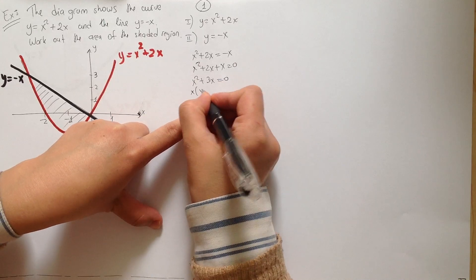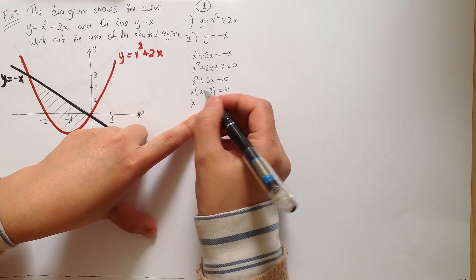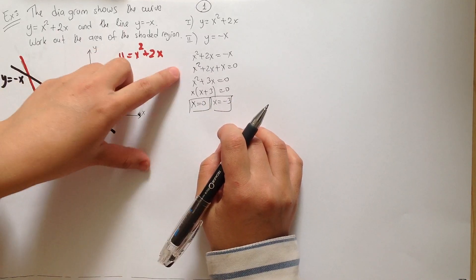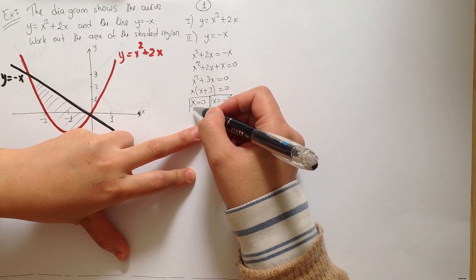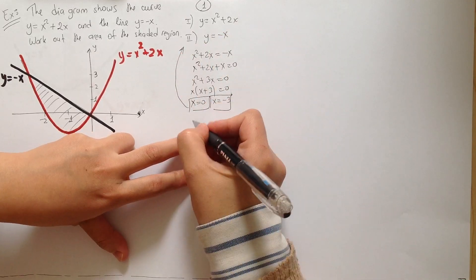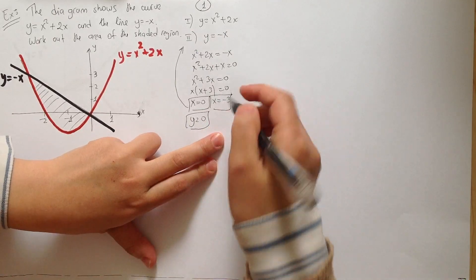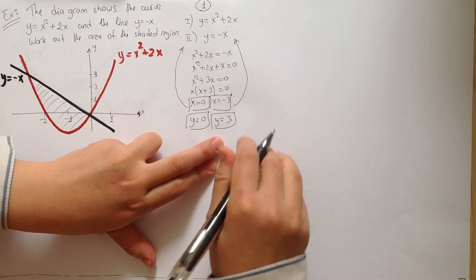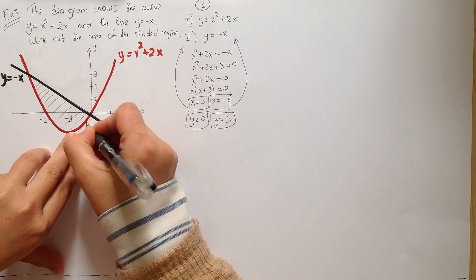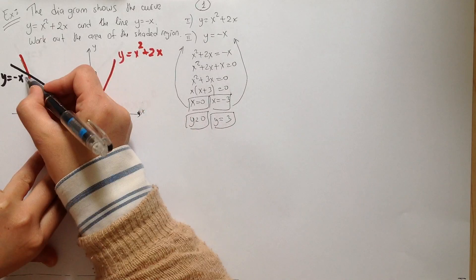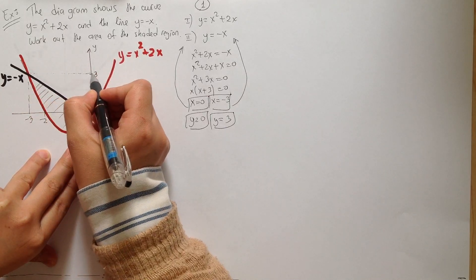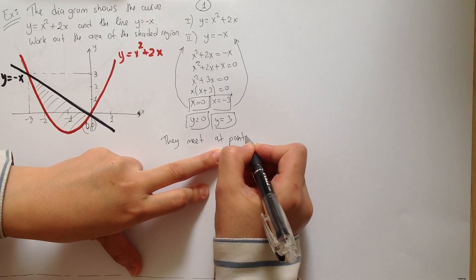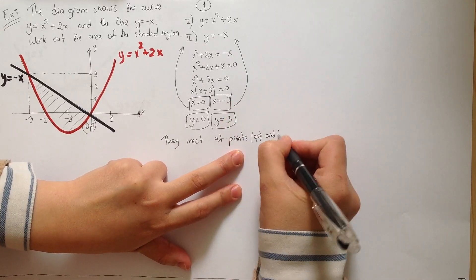Taking out the common factor x, we get x(x plus 3) equals 0. So we have two solutions: x equals 0 and x equals minus 3. To find y, substitute x equals 0 into the second equation: y equals 0. When we substitute x equals minus 3 into the second equation, y equals 3. So the curves meet at points (0, 0) and (minus 3, 3).